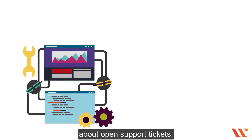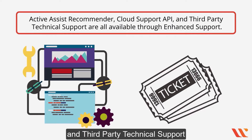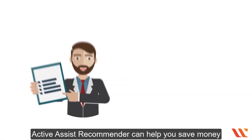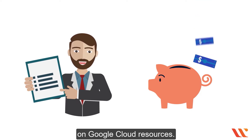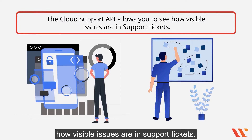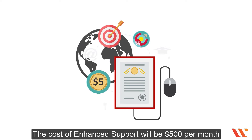Enhanced support provides phone support for technical concerns for critical difficulties, 24 hours a day, seven days a week. You can also contact the technical support team about open support tickets. Active Assist Recommender, Cloud Support API, and third-party technical support are all available through enhanced support. Active Assist Recommender can help you save money on Google Cloud resources, and the Cloud Support API allows you to track visible issues in support tickets. The cost is $500 per month plus 3% of Google Cloud utilization.